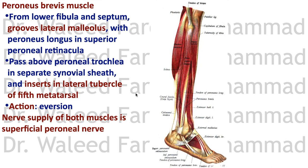Peroneus brevis originates from the lower fibula — peroneus longus from the upper fibula. Both travel together in the superior peroneal retinaculum, then are separated by a trochlea and pass in separate synovial sheaths below it. Peroneus brevis inserts into the lateral tubercle of the fifth metatarsal bone. Its action is eversion, with assistance in plantar flexion. The nerve supply of both peroneus longus and brevis is the superficial peroneal nerve.